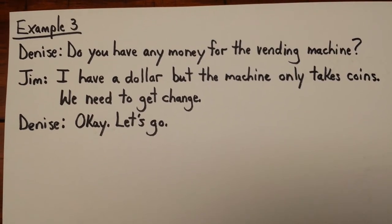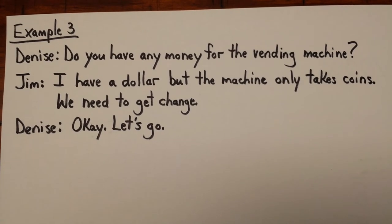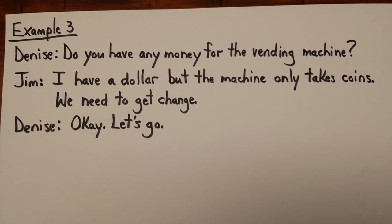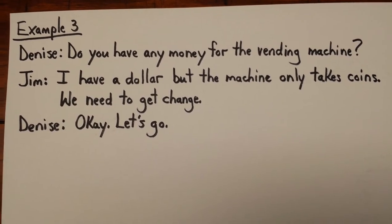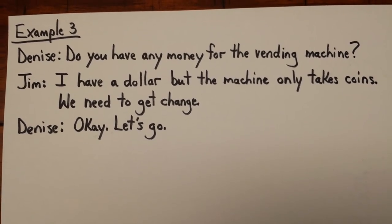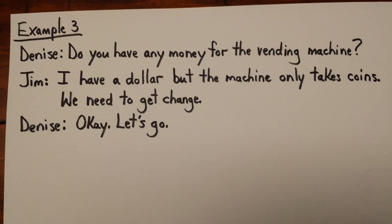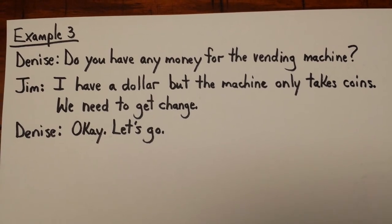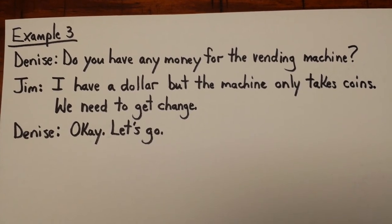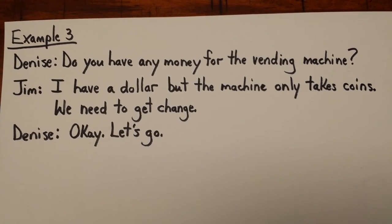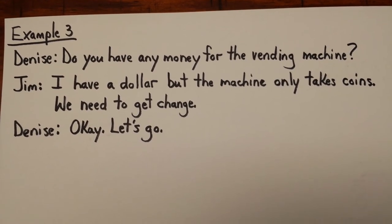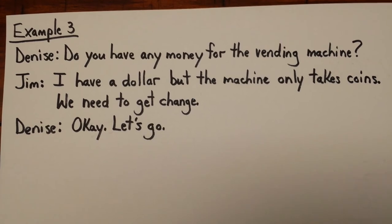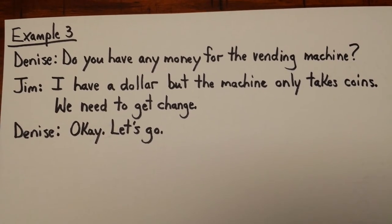Example three — Denise: do you have any money for the vending machine? Jim: I have a dollar, but the machine only takes coins. We need to get change. Here, Jim did not use the word 'bill' — he said 'I just have a dollar.' He could have said 'I have a dollar bill,' but it's really unnecessary; the word 'bill' is understood. 'The machine only takes coins' means the machine only accepts coins, so Jim used the word 'coins' because he was talking about the physical object. He could have also said 'the machine only takes change.' Then he says 'we need to get change,' meaning he wants to exchange his dollar for coins.